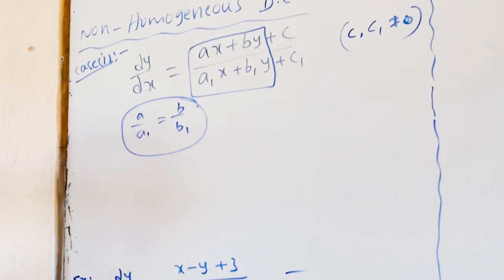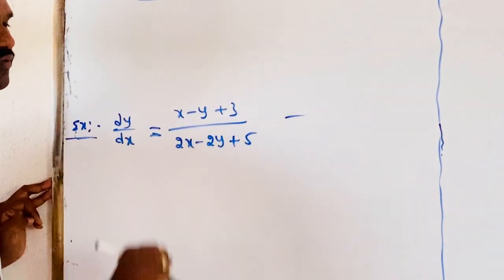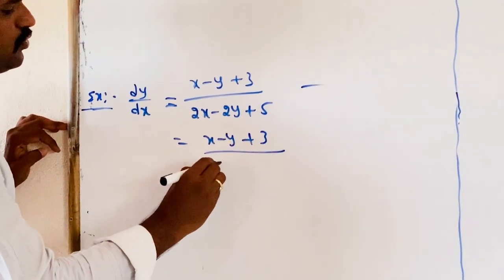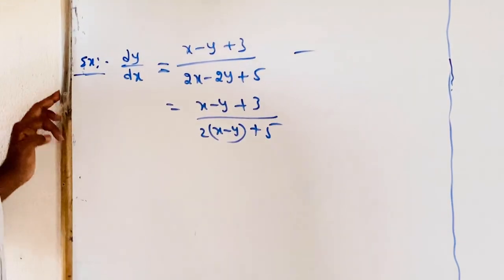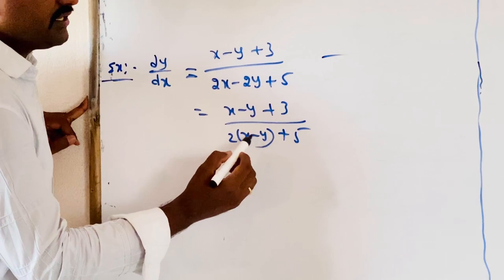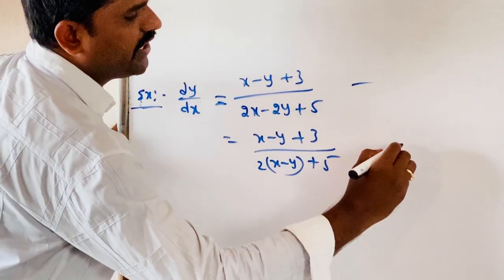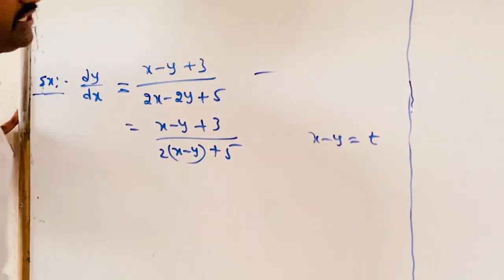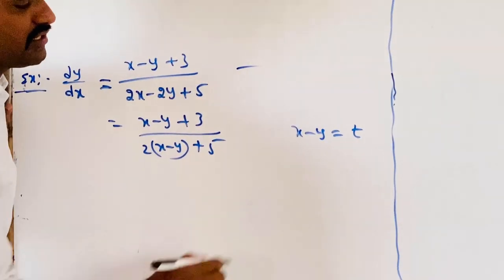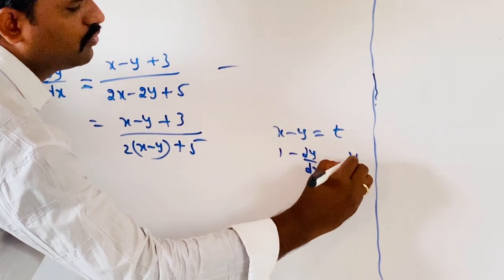For example, we have the problem dy/dx = (x − y + 3) / (2x − 2y + 5). Observe that x − y appears in both the numerator and denominator — both are the same terms. So we substitute t = x − y. Then differentiating with respect to x on both sides gives 1 − dy/dx = dt/dx.